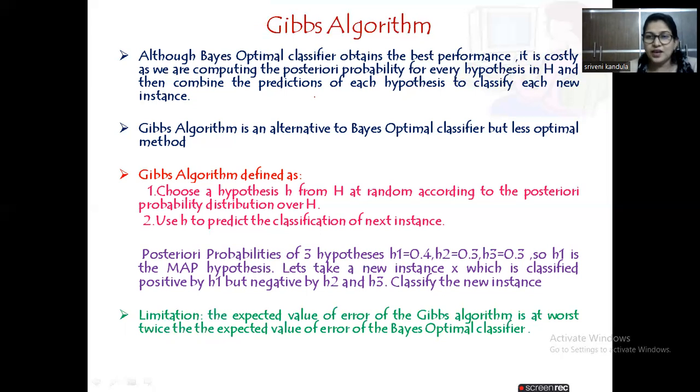Sometimes you might choose Gibbs if you don't want your classification to be costlier, but the result could be diverse. Using Gibbs algorithm, we cannot assure performance. It is purely dependent on how well you are choosing the hypothesis h. What is the random approach that you are following to pick the hypothesis?